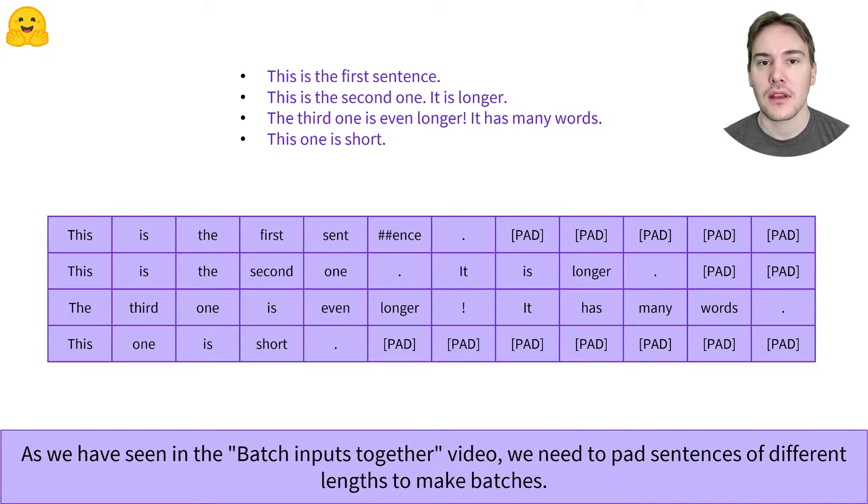Here for instance, the longest sentence is the third one, and we need to add 5, 2, or 7 pad tokens to the other sentences to have 4 sentences of the same length.